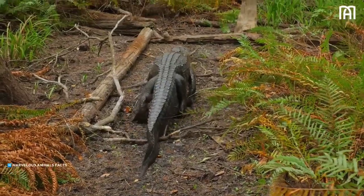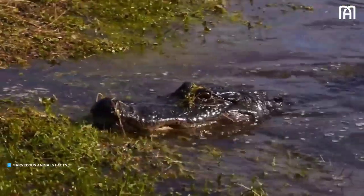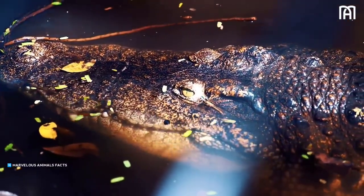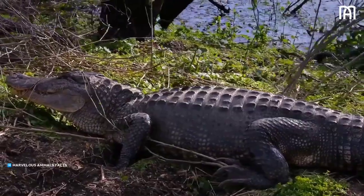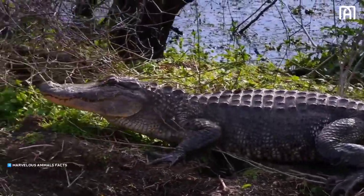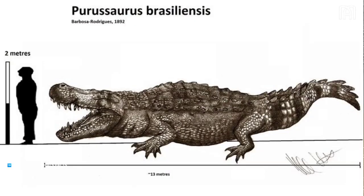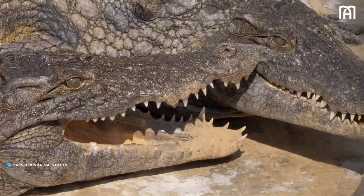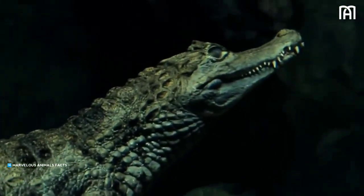An alligator, or colloquially gator, is a large reptile in the Crocodilia order in the genus alligator of the family Alligatoridae. The two extant species are the American alligator, Alligator mississippiensis, and the Chinese alligator, Alligator sinensis. Additionally, several extinct species of alligator are known from fossil remains. The name alligator is probably an anglicized form of 'El Lagarto,' the Spanish term for 'the lizard,' which early Spanish explorers and settlers in Florida called the alligator.